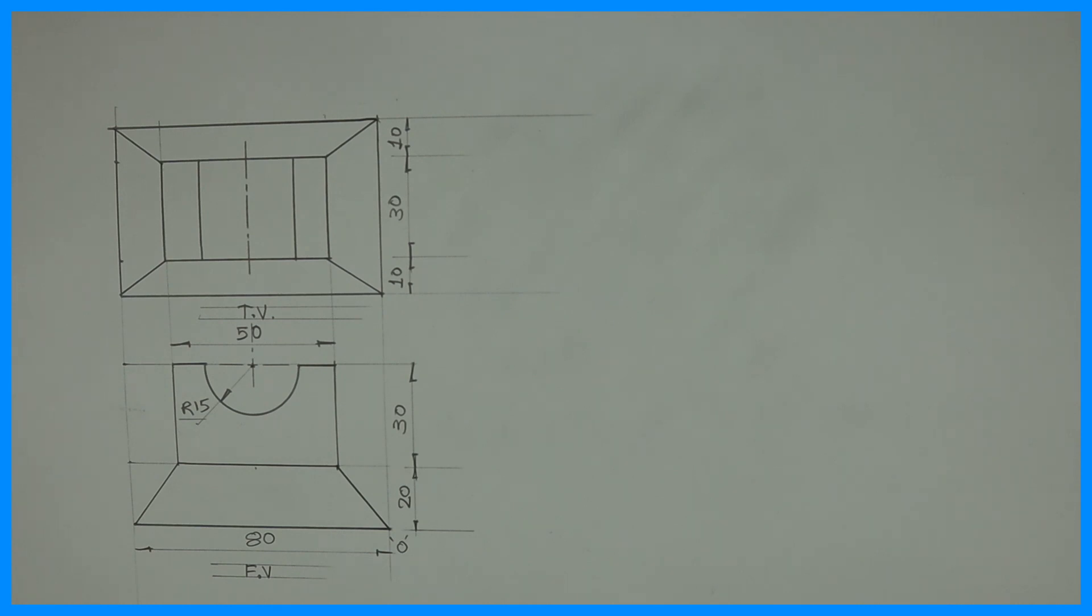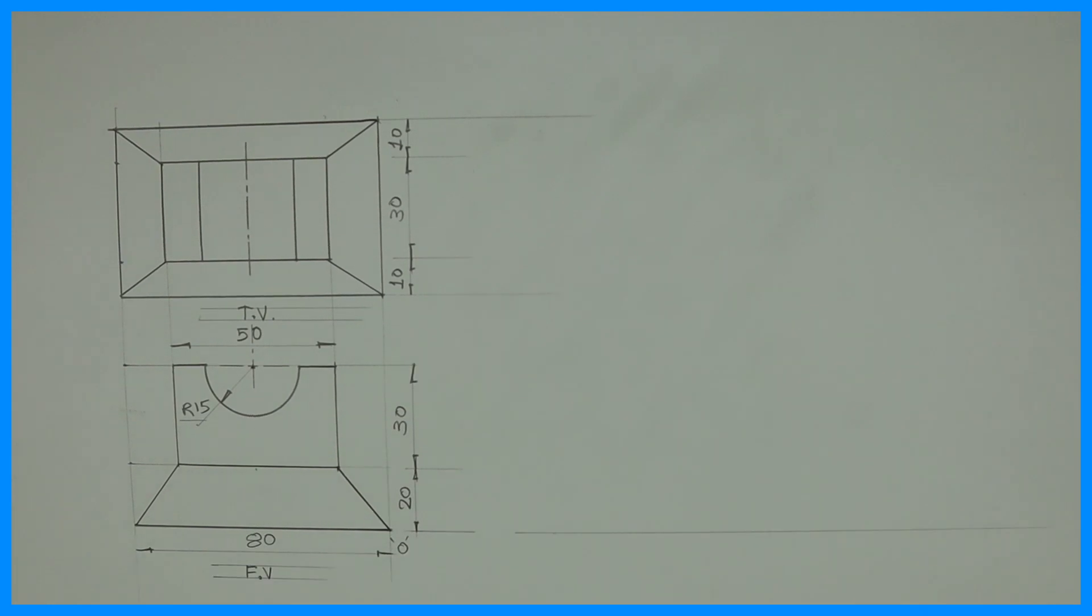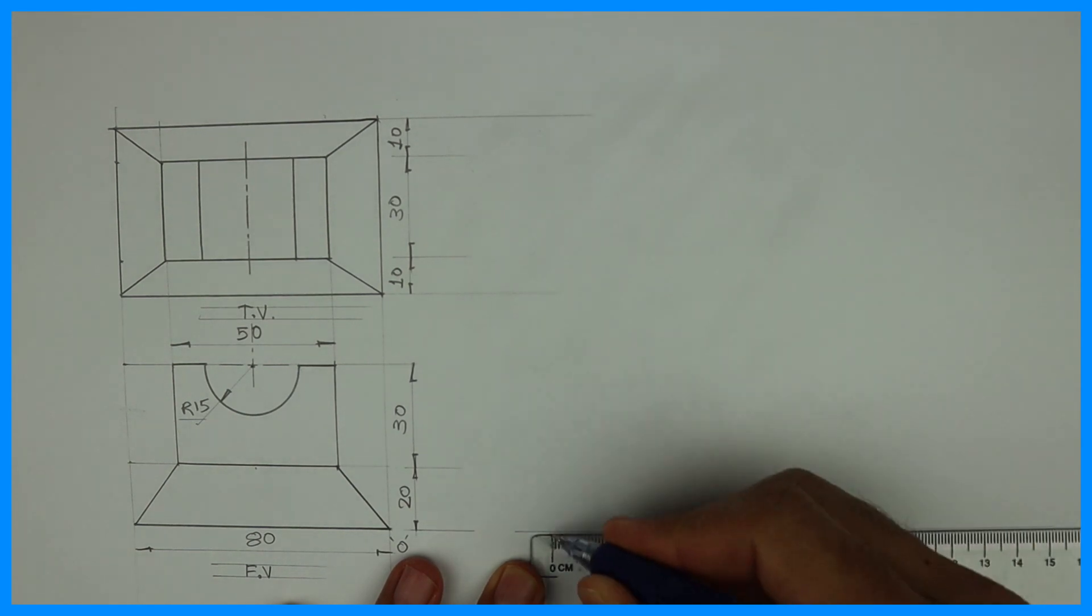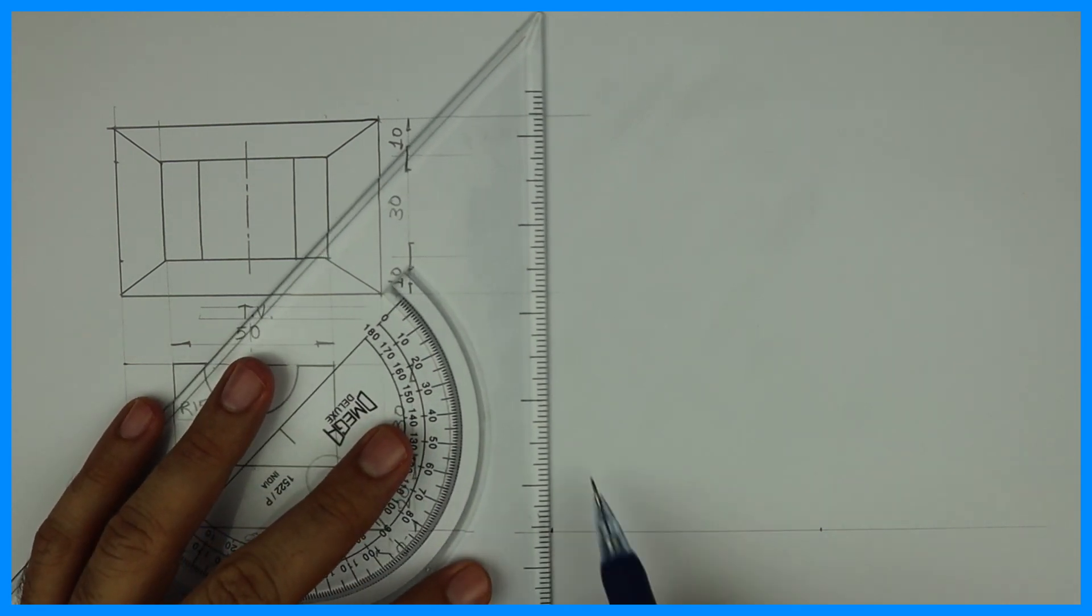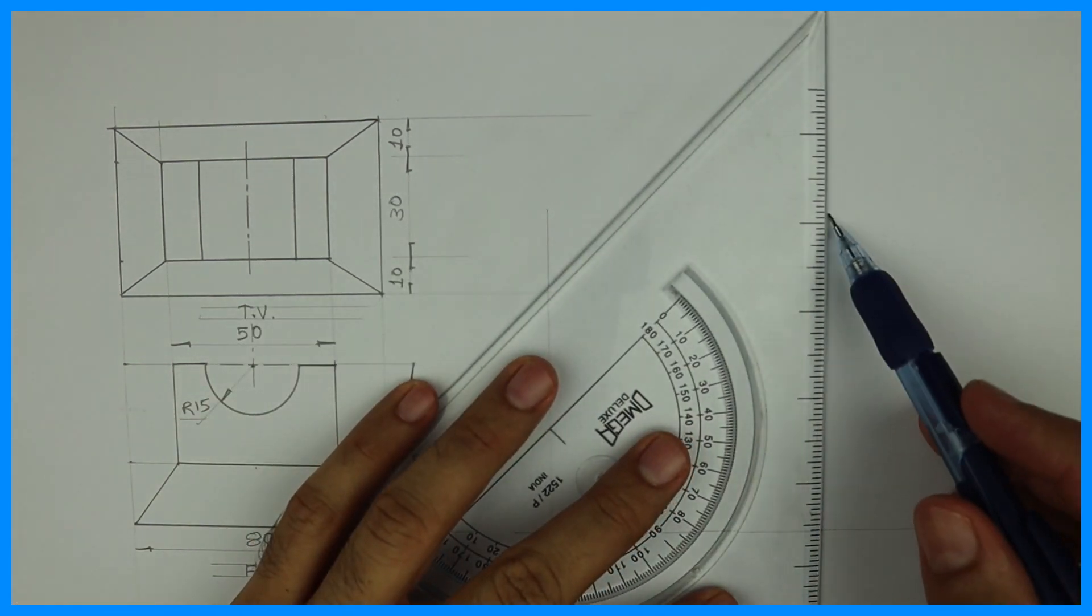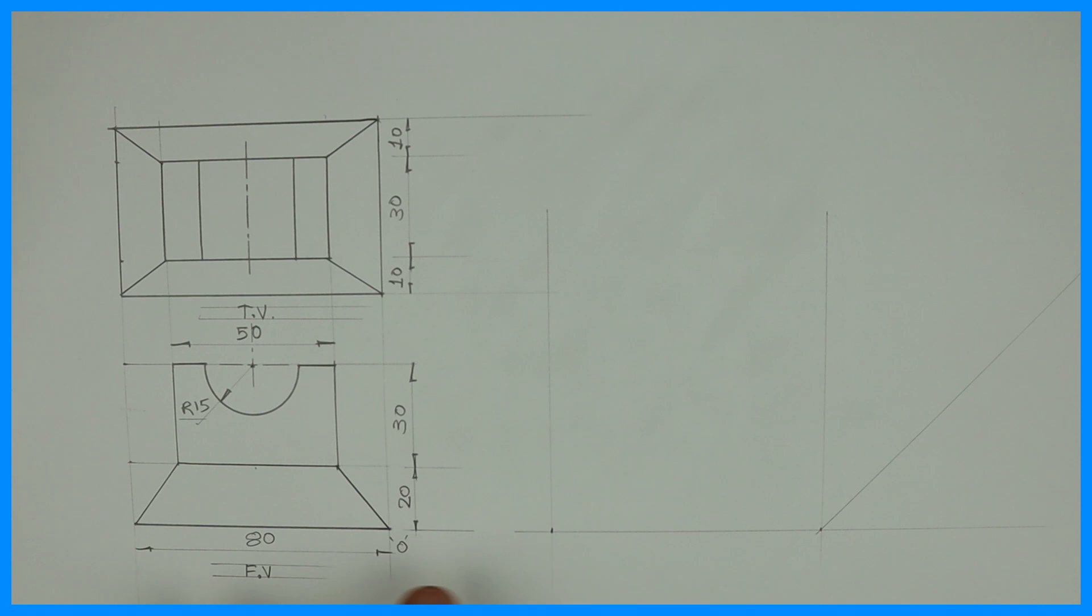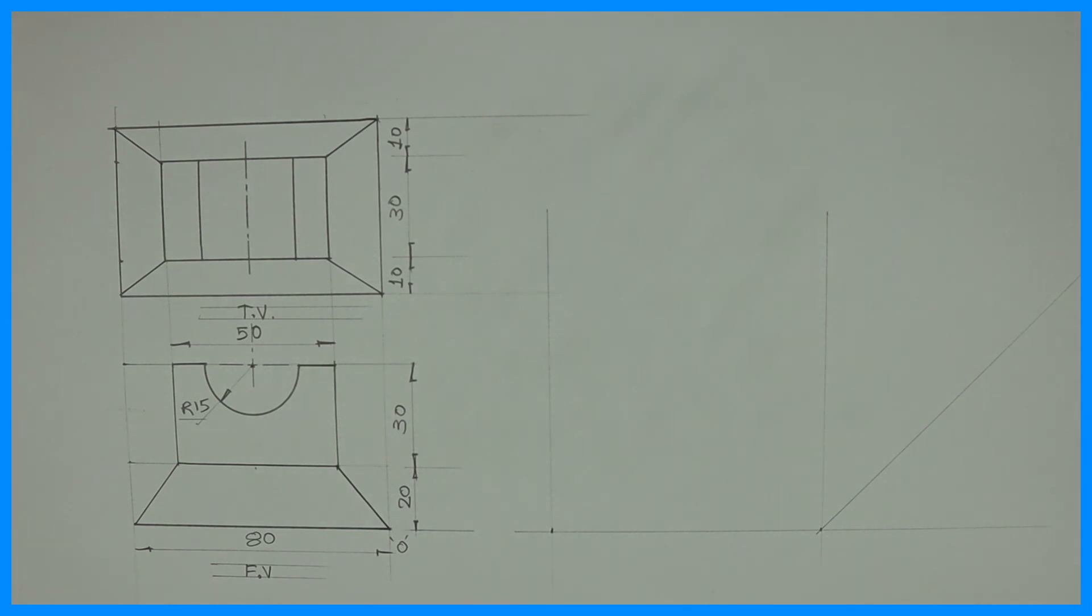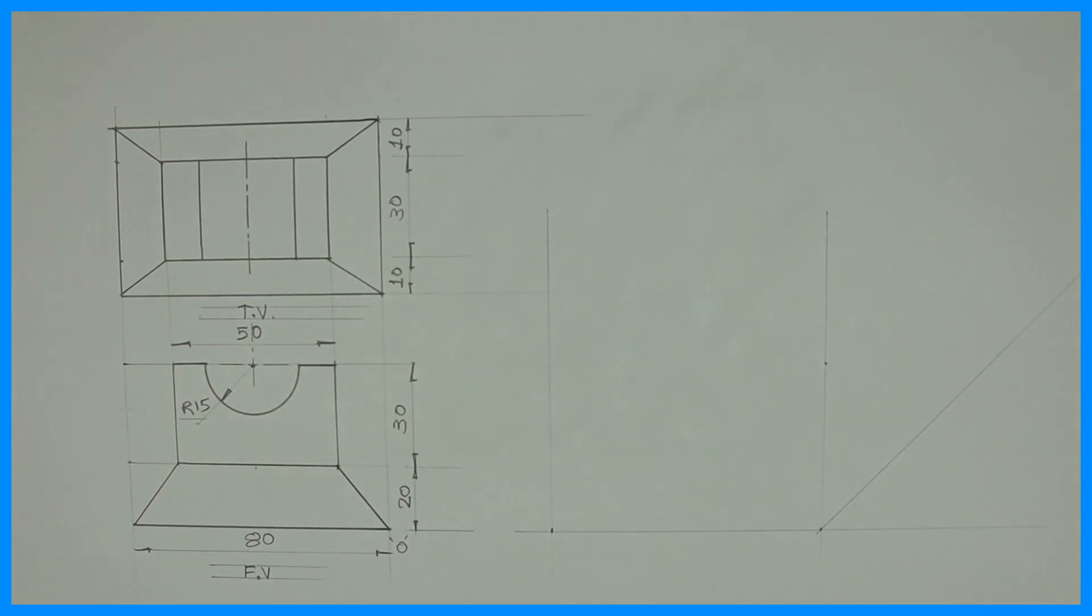So first we will draw a layout, where we will take length 80, height 50 and width 50. So first we will mark 80. Then height 50. See I have taken receding angle 45. 80 and 50. You can take 30 also, if it is mentioned in the question.